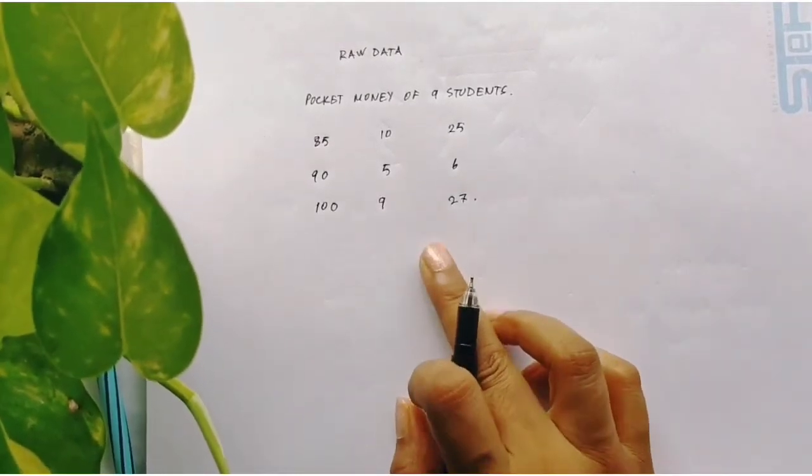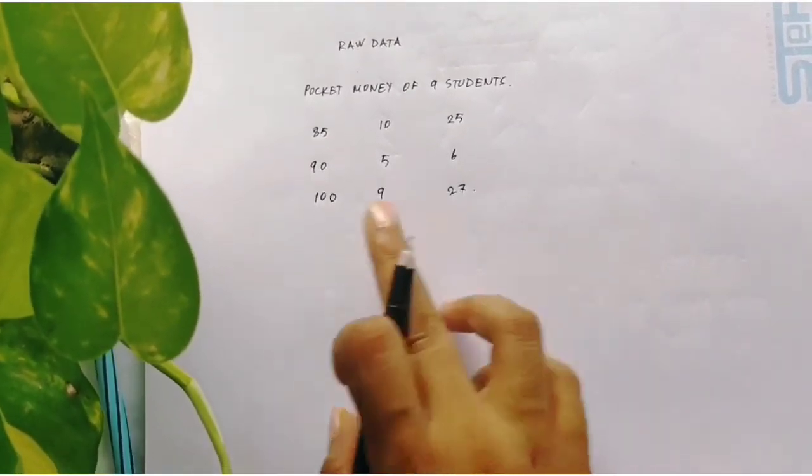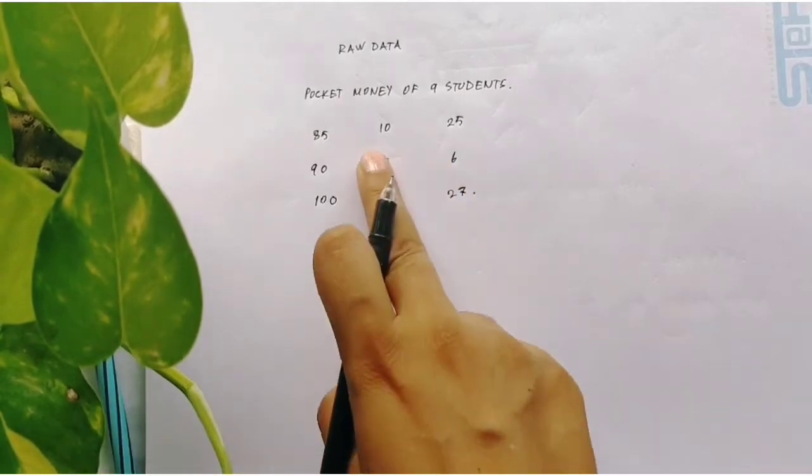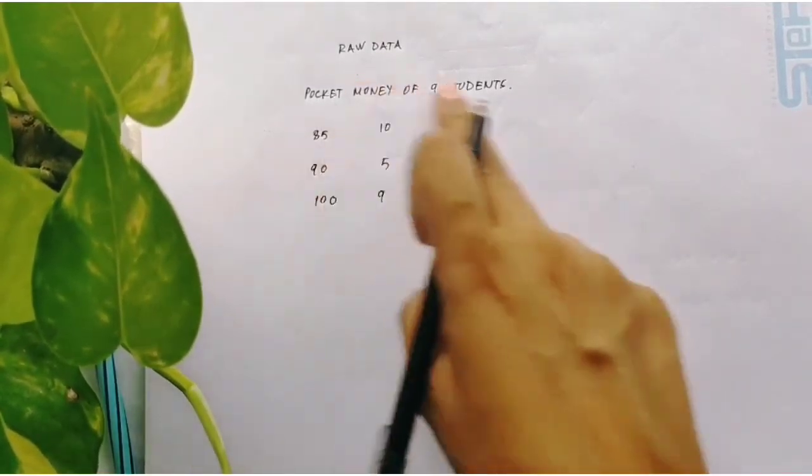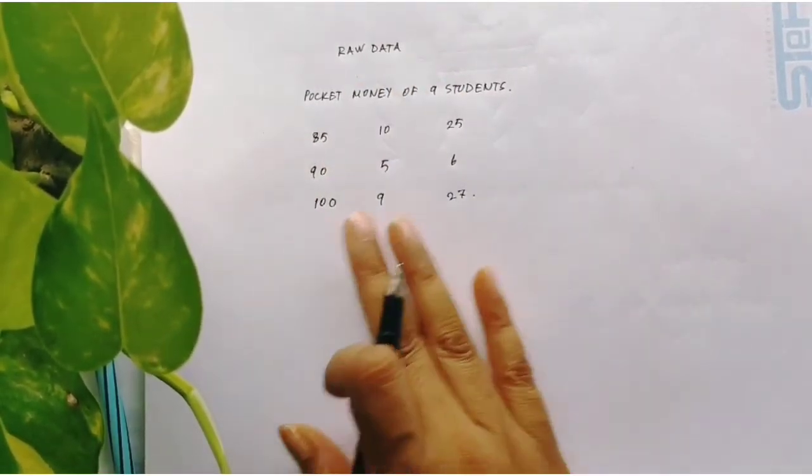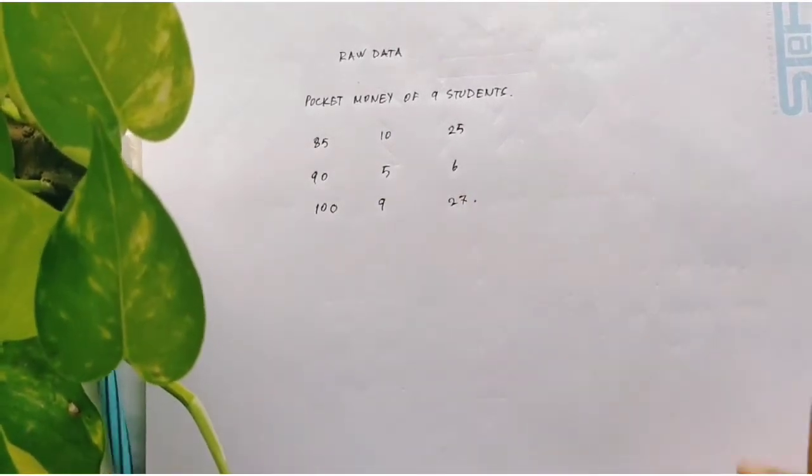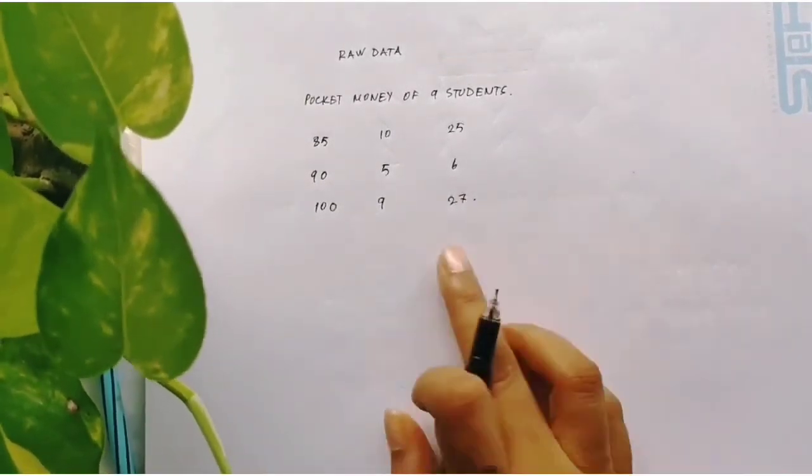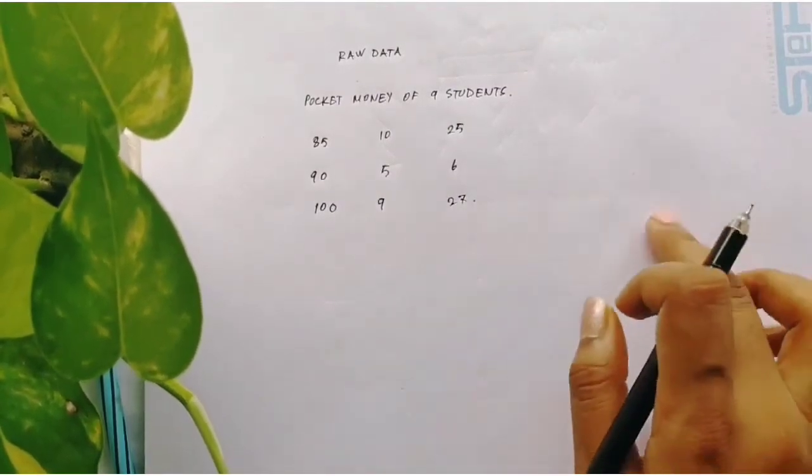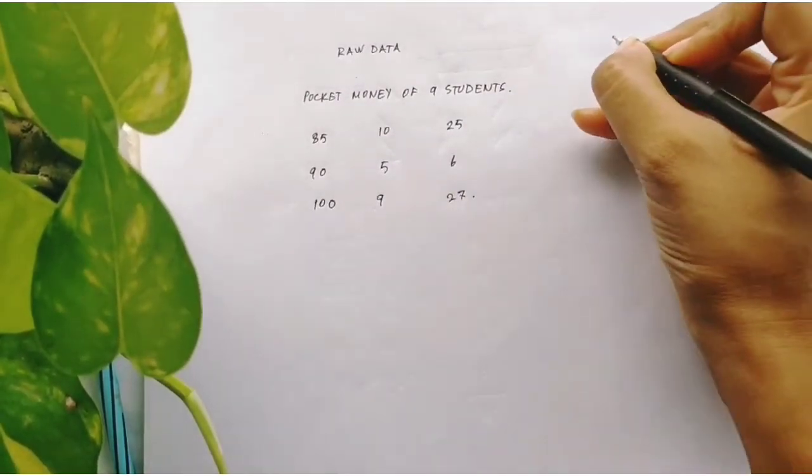You see this kind of data? It is directly taken from the field, it has not been processed. They are randomly placed, they are not arranged, and they do not show any kind of pattern. Right now I have not analyzed this, and this is in the natural form, so this is raw data.